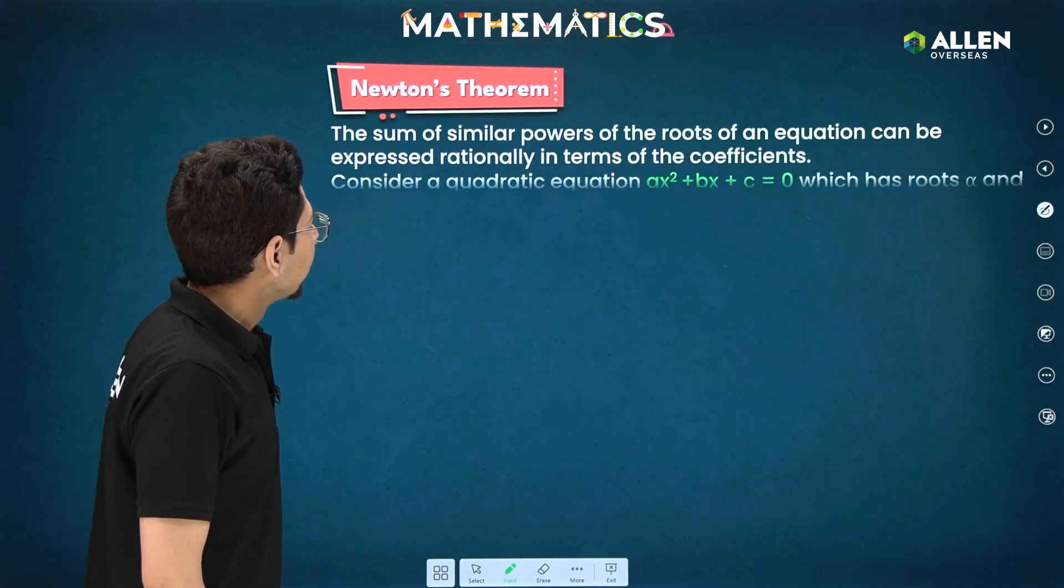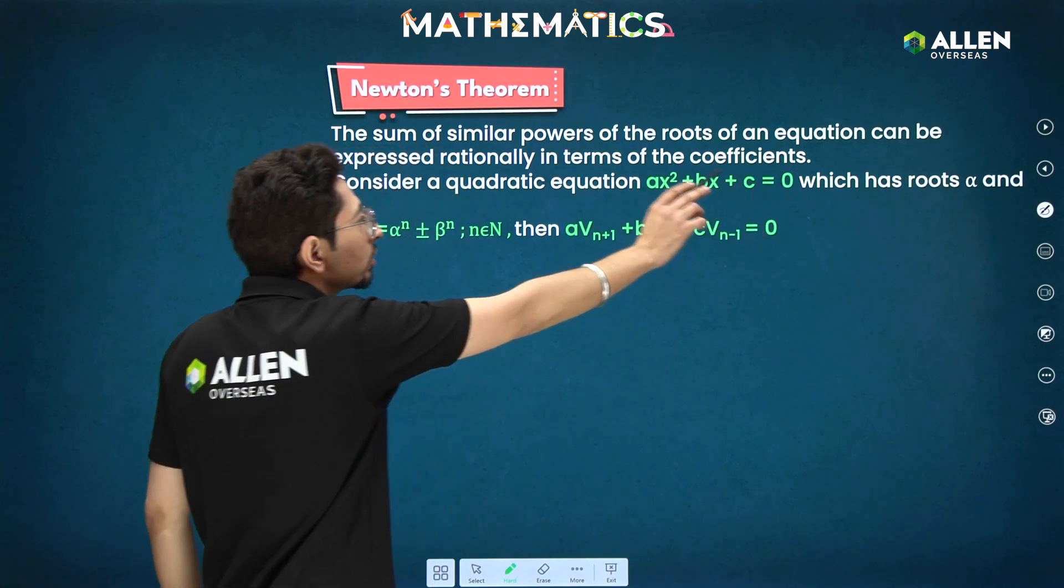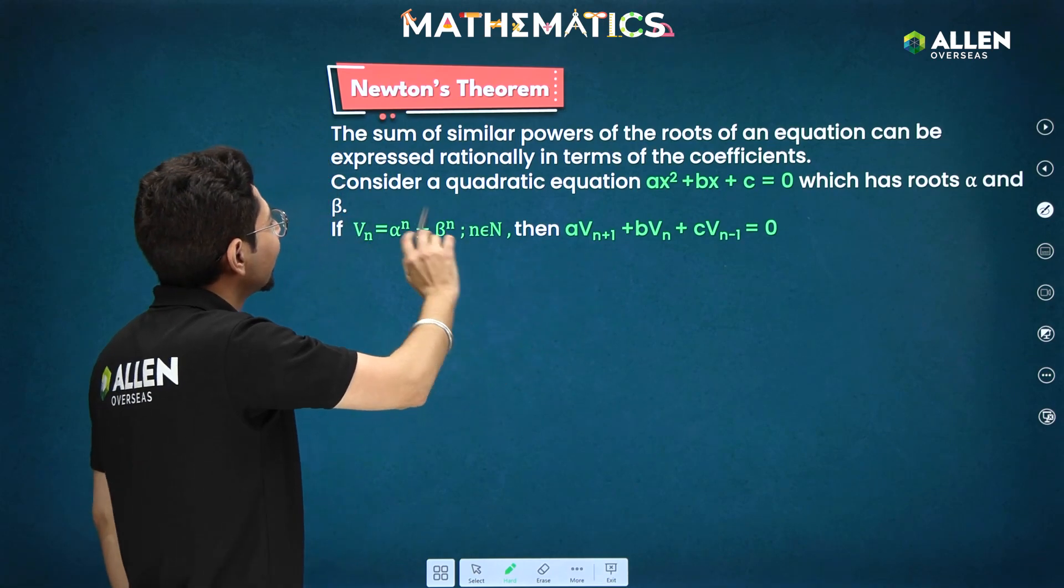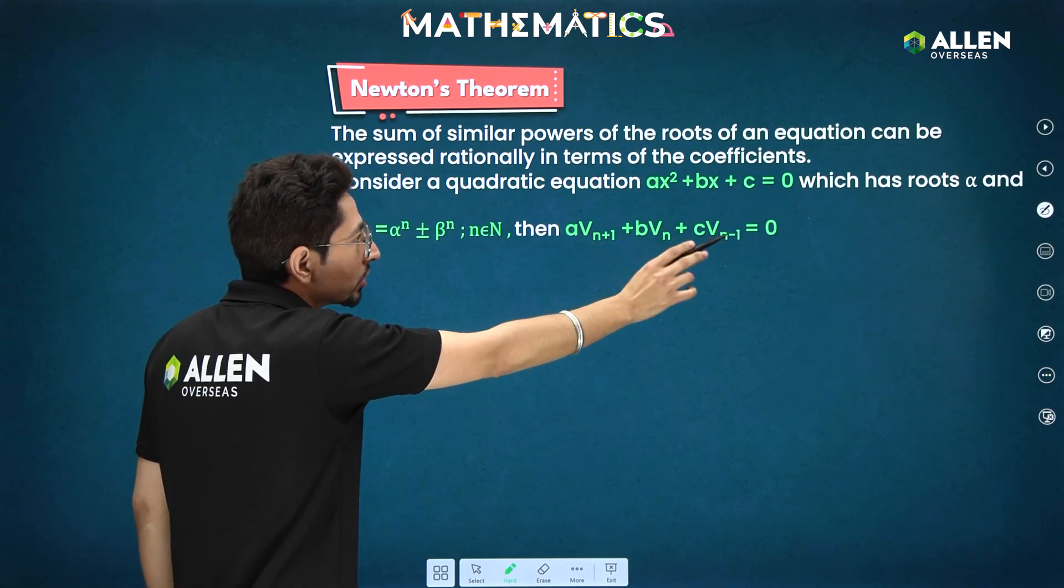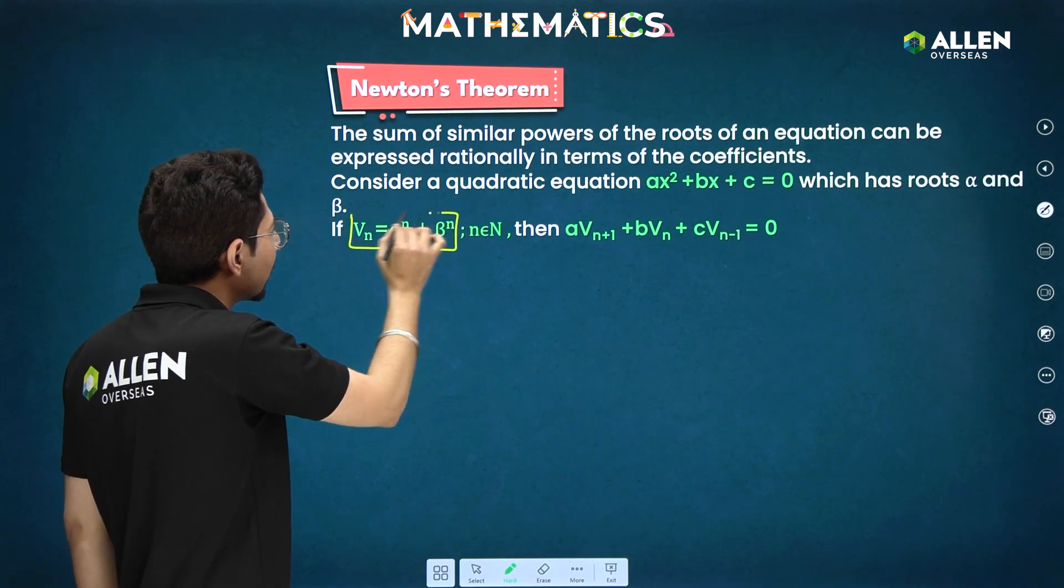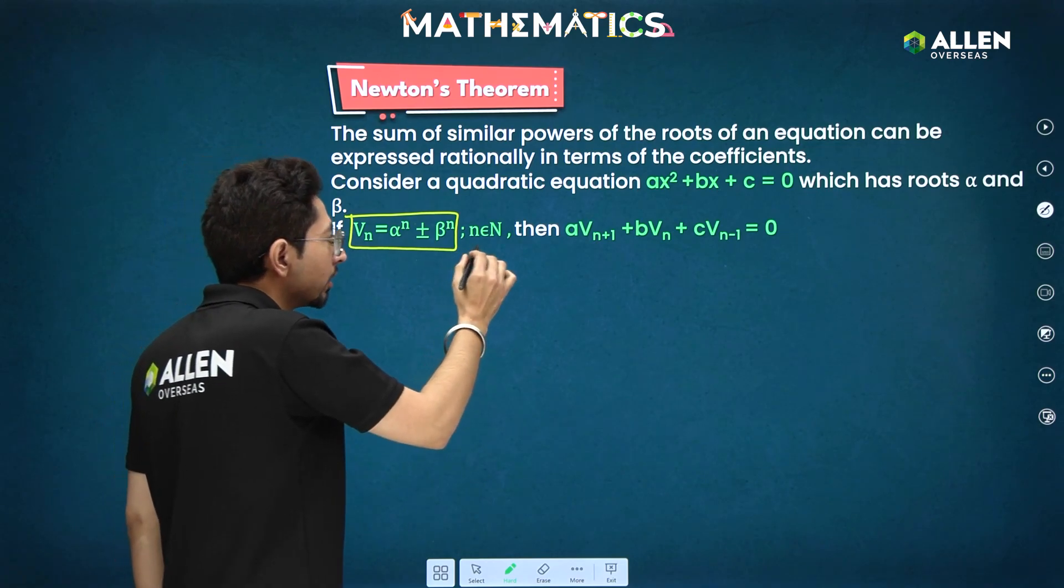Now understand here what is Newton's theorem? The sum of similar powers of the roots of an equation can be expressed rationally in terms of coefficients. Consider a quadratic equation which has roots alpha beta. So if this is the expression in terms of alpha and beta raised to similar powers, where n is a natural number,